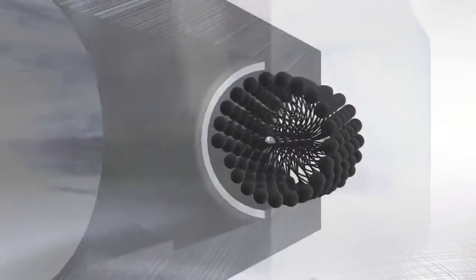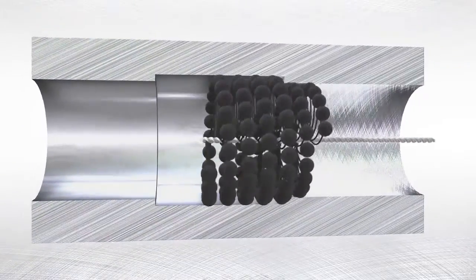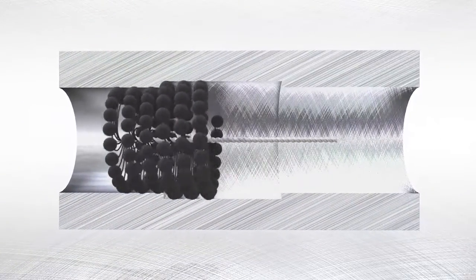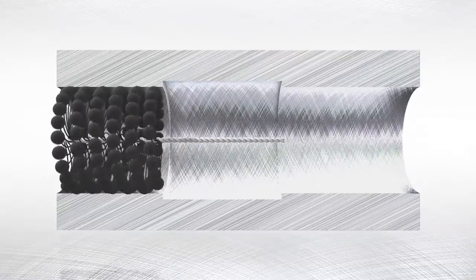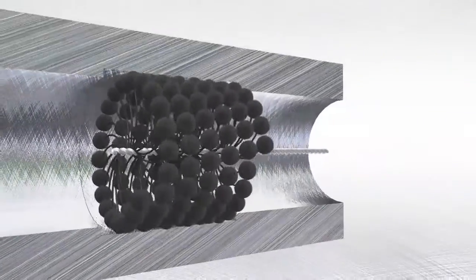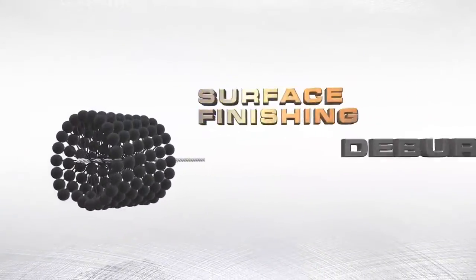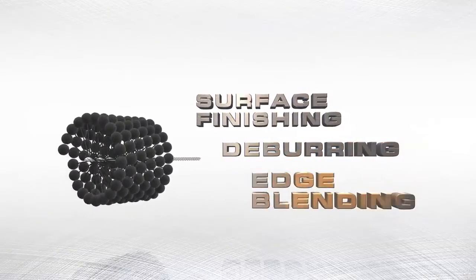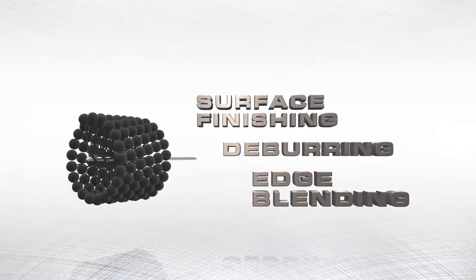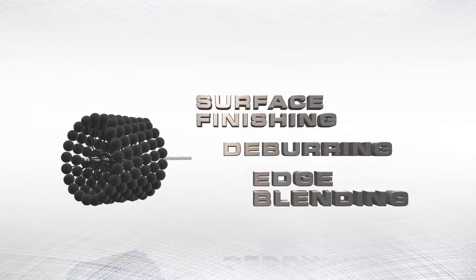The Flexhone process, a low temperature abrading process, produces a controlled surface condition free of cut, torn, and folded metal that is unobtainable by any other method. The Flexhone tool has three distinct functions: surface finishing, deburring, and edge blending. The tool can perform one or all three functions at the same time.